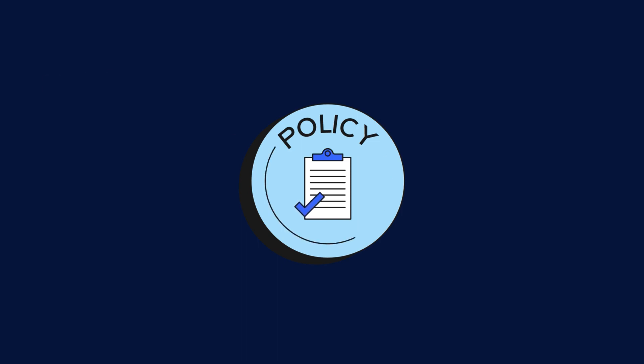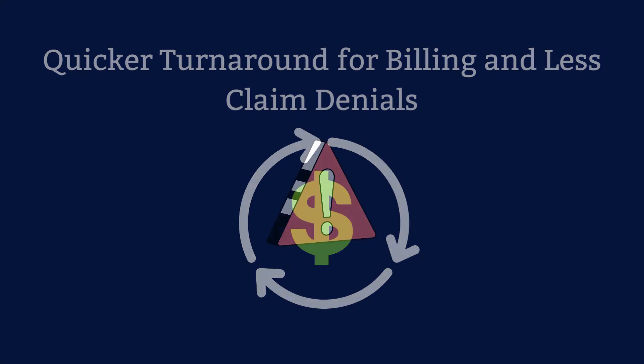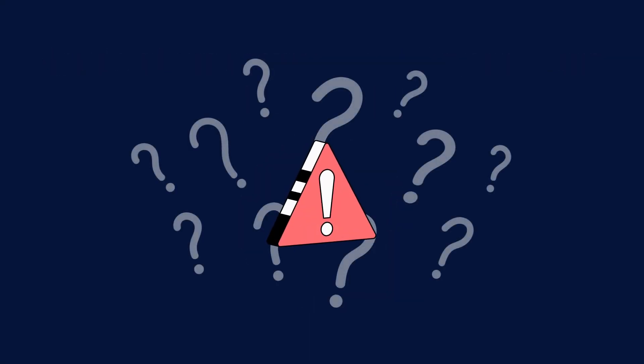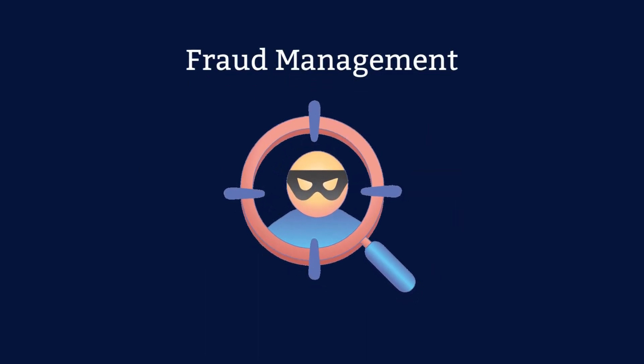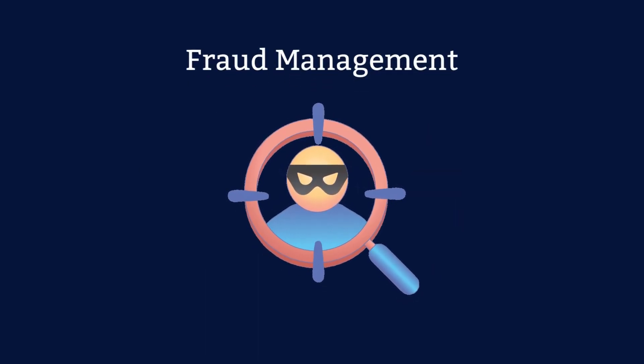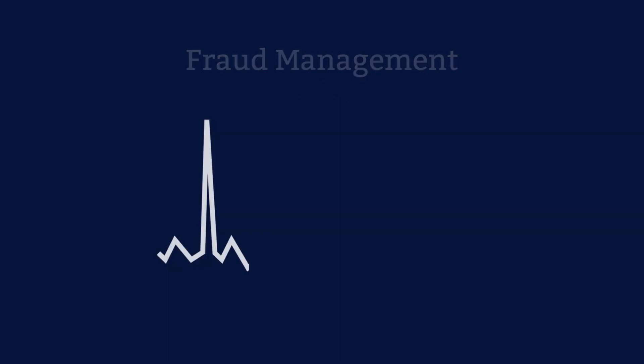Next is quicker turnaround for billing and fewer claim denials. The level of specificity in ICD-10 codes helps reduce errors and confusion when billing, leading to fewer rejected claims and creating a more streamlined claim submission process. And lastly, fraud management — ICD-10 codes can help detect potential fraud. The system enables you to check for inconsistencies between procedure codes and diagnoses, and for illogical combinations of codes.